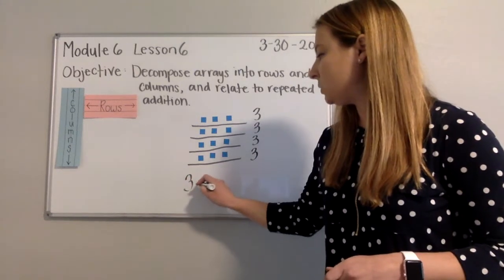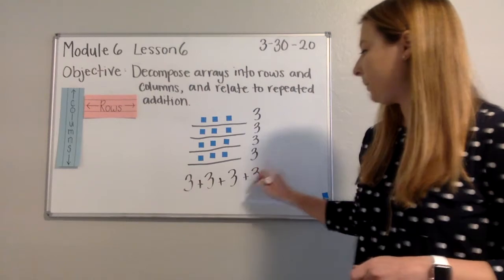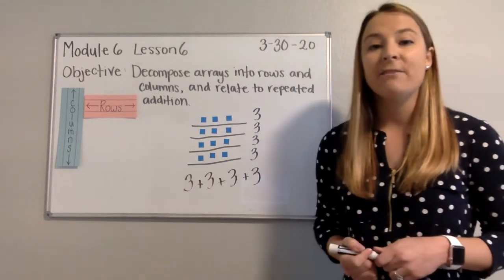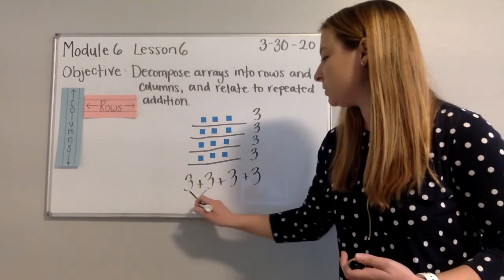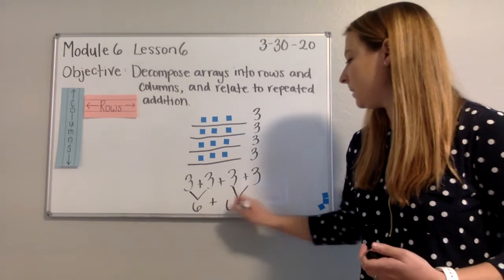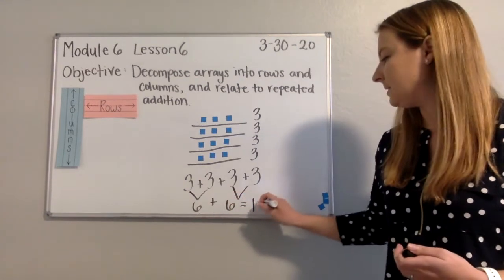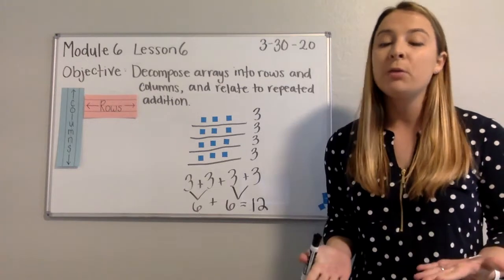My repeated addition sentence would be three plus three plus three plus three. I could go ahead and find a more efficient way to add my repeated addition sentence by combining my three plus three to make six. Plus three plus three makes six. And six plus six makes twelve. Good job working through that one with me.